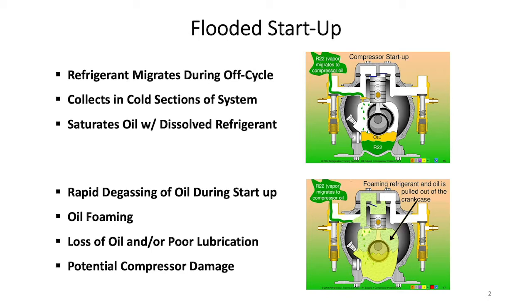A second area of concern occurs when a system is in the off cycle or off season — particularly in winter when an air conditioner is shut down. That's what we call refrigerant migration and flooded start. Refrigerant seeks out the coldest part of the system and can migrate and condense in the compressor sump where it's not supposed to be. It will dissolve into the lubricant, and when the system starts up, a rapid change in temperature and pressure causes that dissolved refrigerant to rapidly degas out, resulting in a lot of foaming. That foam moves lubricant to places where it's not useful, leaving inadequate viscosity and lubrication for moving parts during that flooded start.